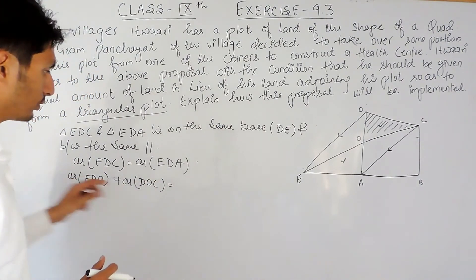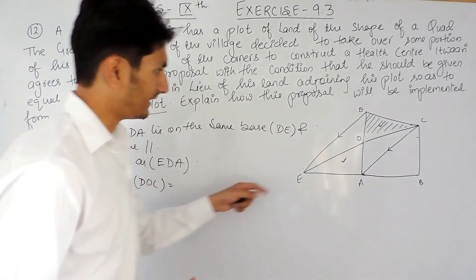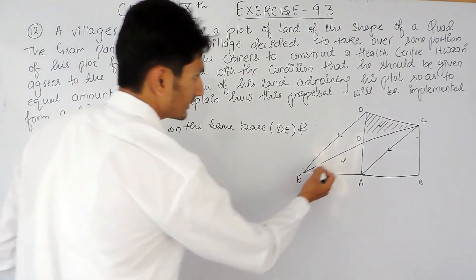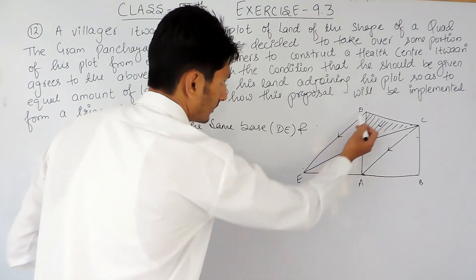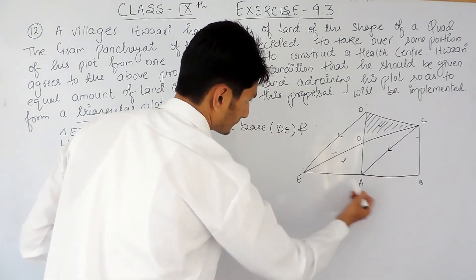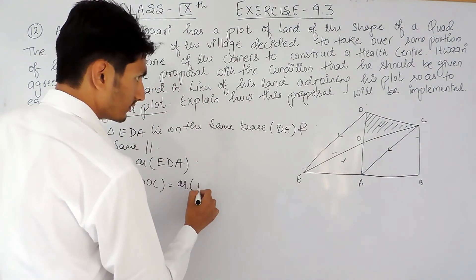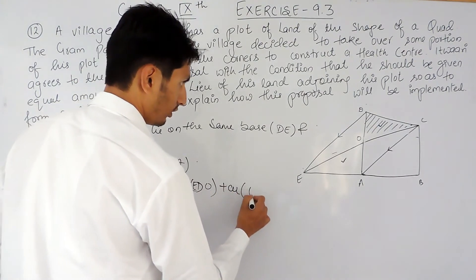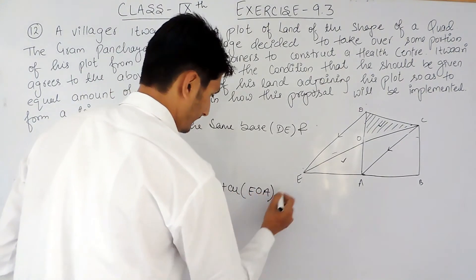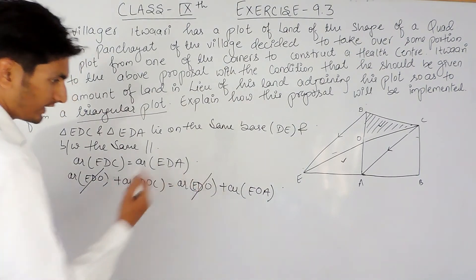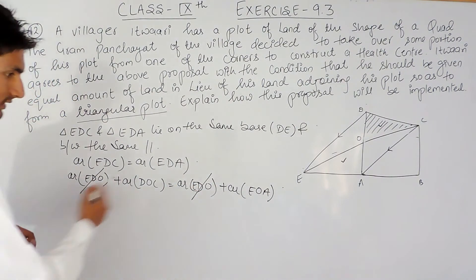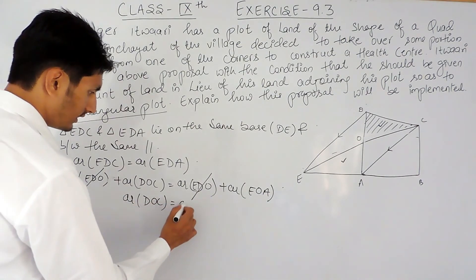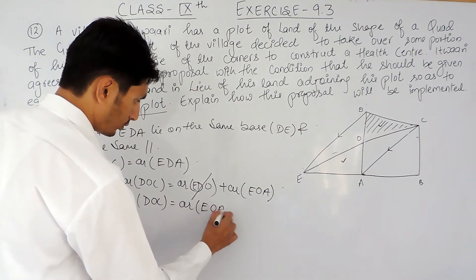Similarly, triangle EDA can be written as area of EDO plus area of DOA. Both expressions have the common part EDO, so that cancels out. This gives us: area of triangle DOC equals area of triangle EOA.